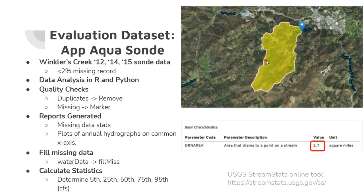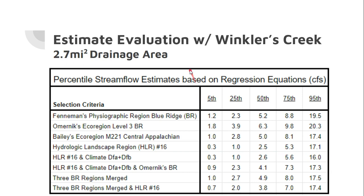A key tool I used was the online USGS StreamStats tool. It allows you to click on a point in a stream and it produces multiple statistics. The key feature I needed was its ability to give me a delineated drainage area polygon with a corresponding drainage area calculated. I did that for the Winkler Creek zone site and found that 2.7 square miles contributes to it. I then plugged that 2.7 square miles into the regression equations previously calculated, driven by gauges selected with each of my selection criteria.